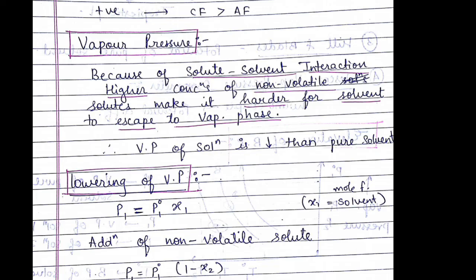Because of the solute-solvent interaction, higher concentrations of non-volatile solute make it harder for the solvent to escape to the vapor phase. This pressure is called as vapor pressure. The vapor pressure of solution is always less than that of pure solvent.